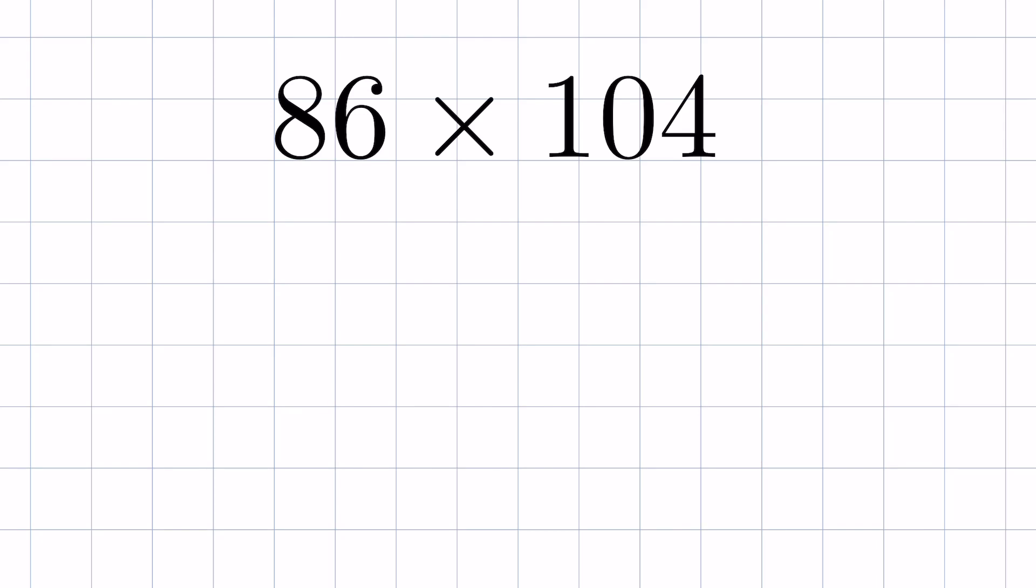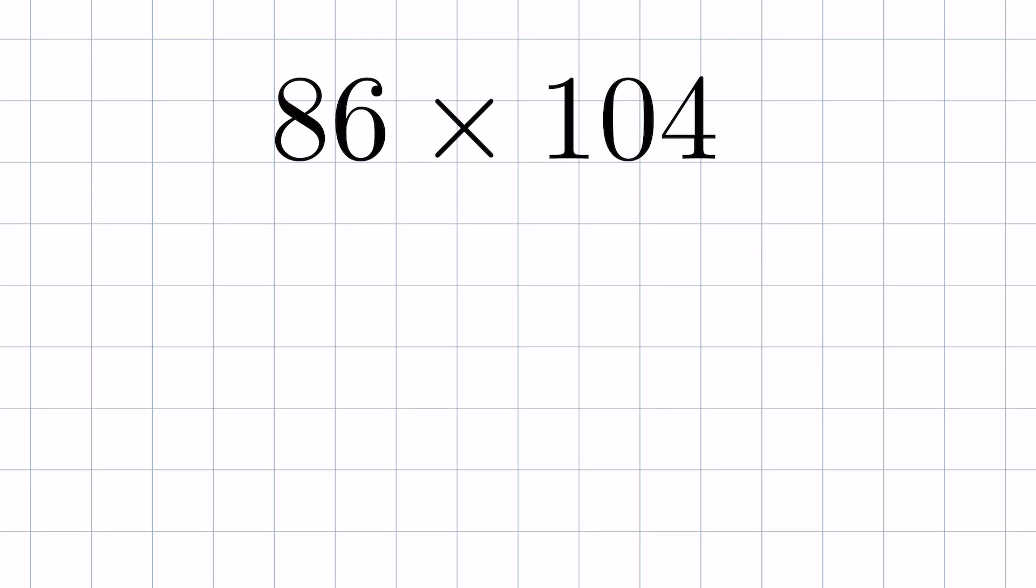86 times 104. Can you multiply these numbers in just a few seconds without using a calculator? In both numbers we have different digits, but we can find a common base number which has zero in it and which is closer to both 86 and 104. Such a number is 100.